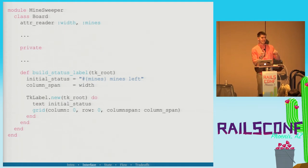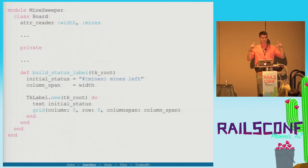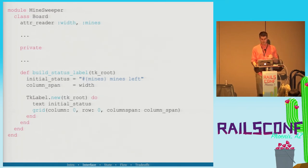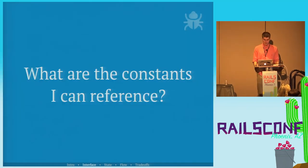Ruby's lexical scope inside a block has reference to local variables when the block was defined. So we take text, mines, left, columns, span, width and move them out into local variables, and everybody's happy. Thing to remember: we used the methods method, found everything we need, real quick, good debugging.